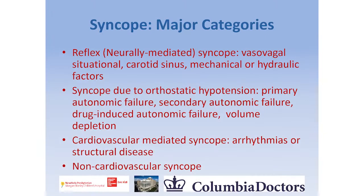Different categories of syncope include reflex or neurally mediated syncope due to vasovagal mechanisms — the vagus nerve slows the heart, activated by things like being scared, frightened, or having blood drawn. There can also be syncope due to orthostatic hypotension, primary autonomic failure, drug-induced autonomic failure, and cardiovascular-mediated syncope where a heart irregularity causes passing out. Part of our job is to figure out the cause.